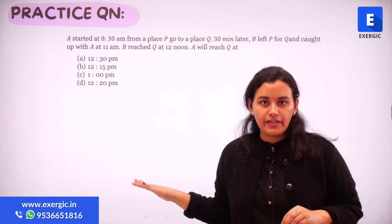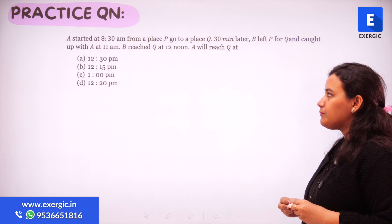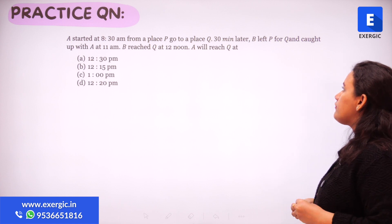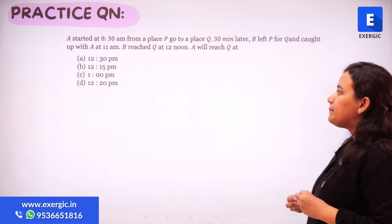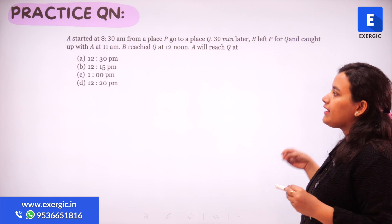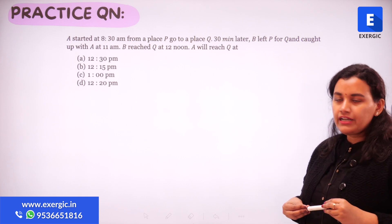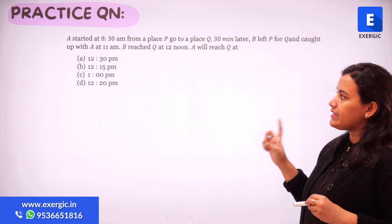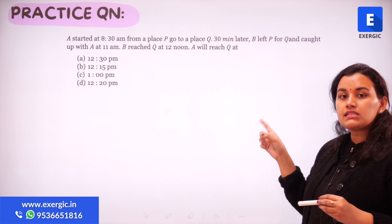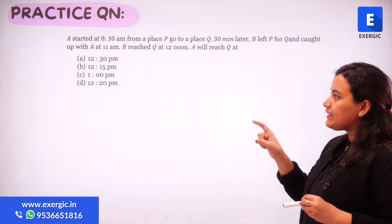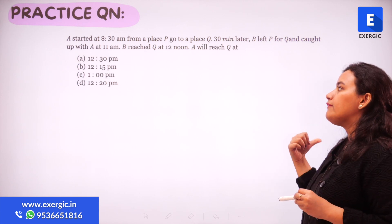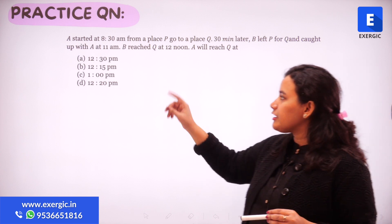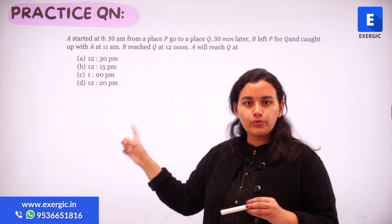Here's the practice question: A started at 8:30 AM from place P to place Q. 30 minutes later, B left P for Q and caught up with A at 11 AM. B reached Q at 12 noon. When will A reach Q? Options are: 12:30 PM, 12:15 PM, 1 PM, and 12:20 PM.